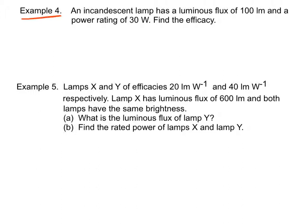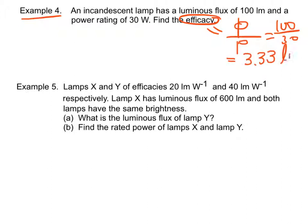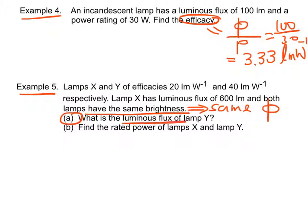Notice that lumens and watts are not identical, since lumens is a unit of light power and watts is a unit of electrical power. Example 4: Efficacy equals luminous flux over the power rating, which is 100 over 30, equal to 3.33 lumens per watt. Example 5: Since both lamps have the same brightness, they have the same luminous flux φ. Therefore, the luminous flux of lamp Y equals the luminous flux of lamp X, which is equal to 600 lumens.